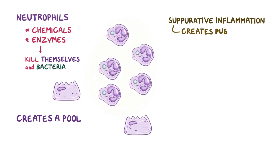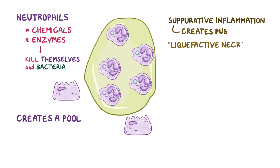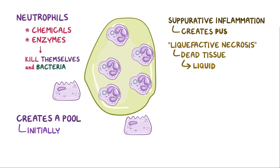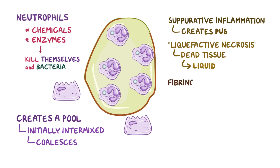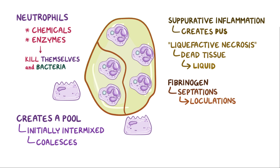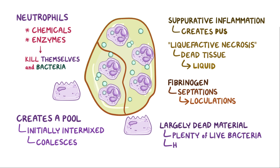From a macroscopic view, this is sometimes referred to as liquefactive necrosis, because the area of dead tissue turns to liquid. Initially the dead tissue is intermixed with healthy tissue, but over time it can coalesce into a single area. Around this pool of pus, a wall of fibrinogen starts to harden into a barrier. Occasionally sheets of fibrin form septations, creating loculations or pockets of pus within the abscess itself — kind of like an abscess within an abscess. Even though the pus is largely dead material, there are still plenty of live bacteria within it, making it highly infectious if spread.